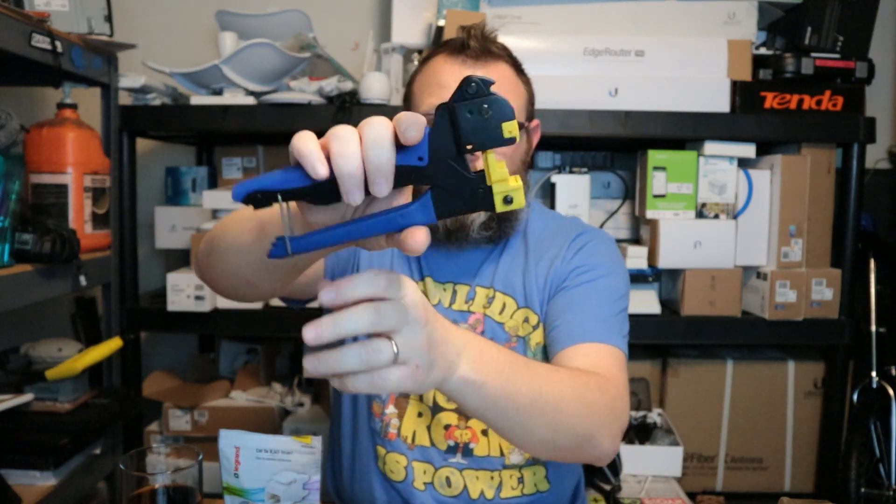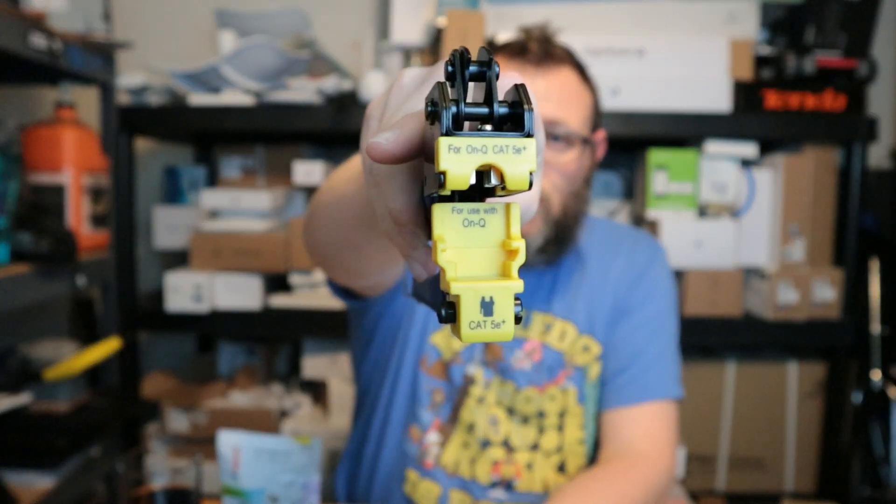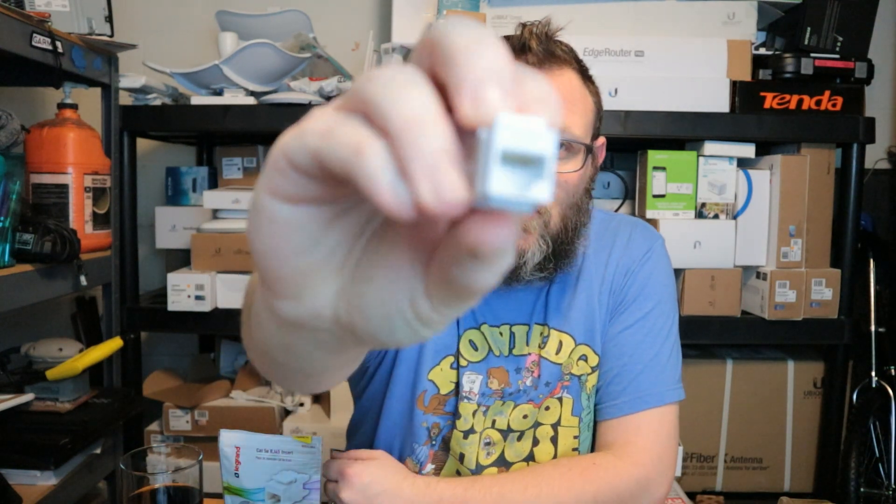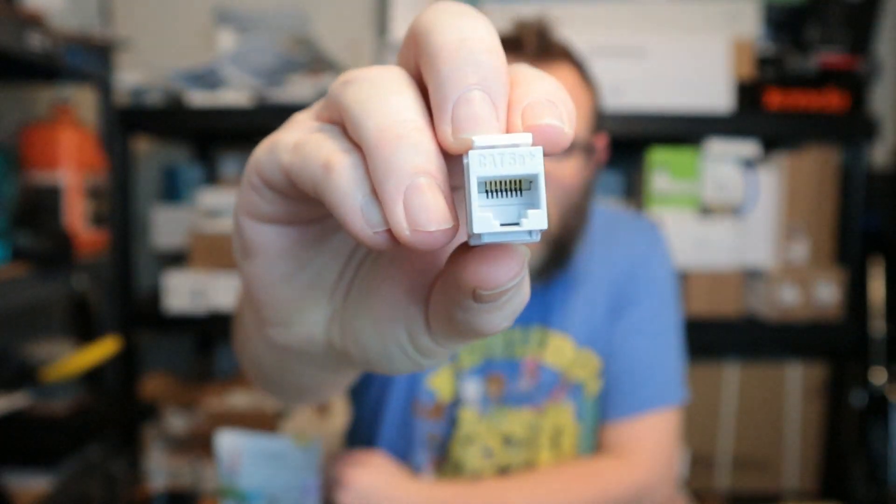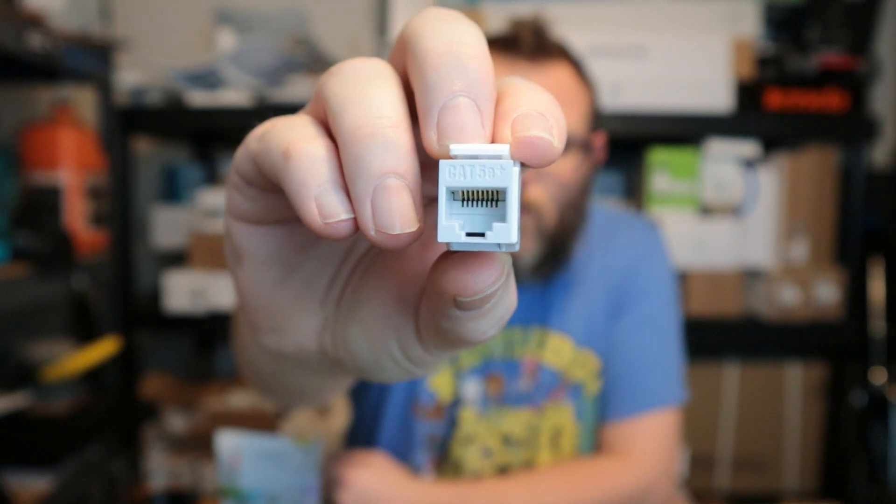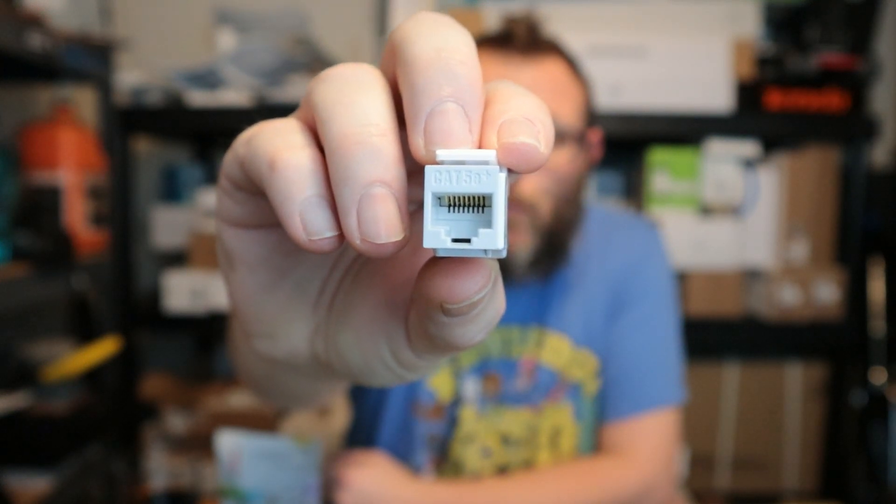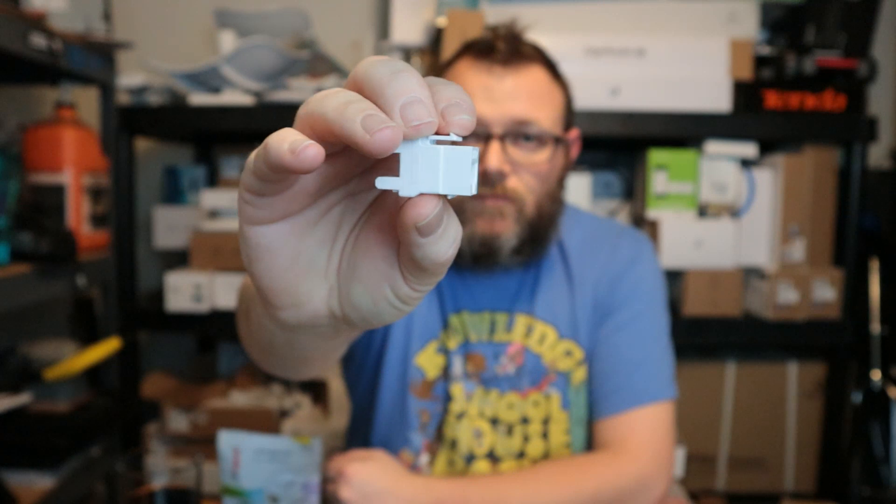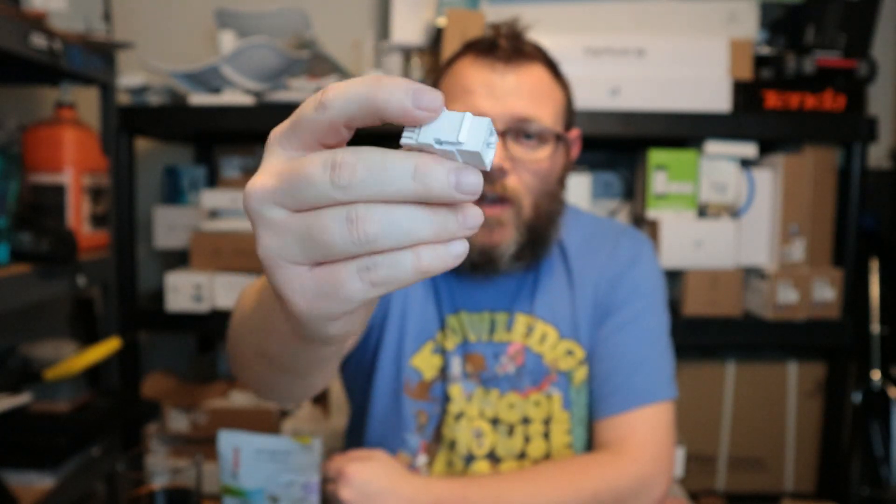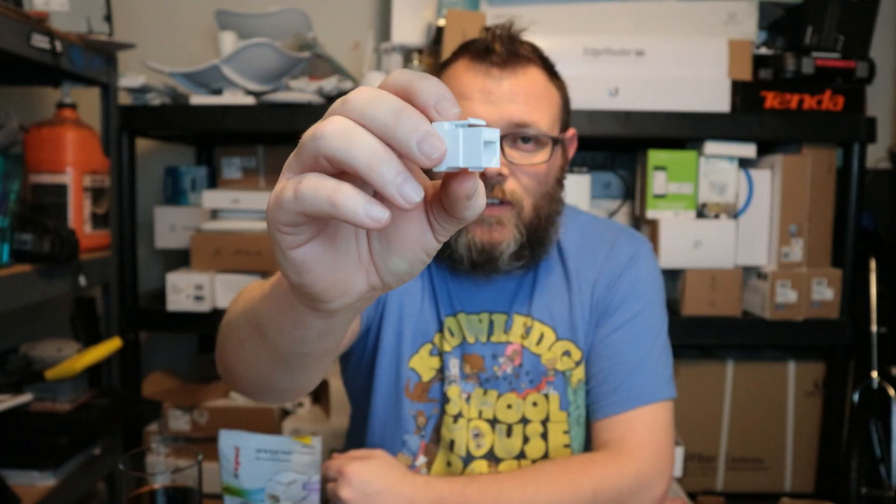What this does is it terminates keystone jacks. You know what a keystone jack is - this is the keystone jack. You're used to seeing these in a wall plate or patch panels. I really like the patch panels that use these guys. It makes it a lot easier, but most places you're going to see this is in your wall plate, patch panels, things like that.